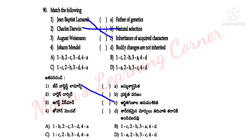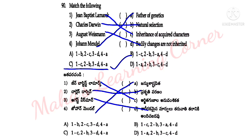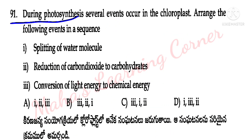Match the following scientists with their contributions: Charles Darwin — natural selection; August Weismann — bodily changes are not inherited; Gregor Johann Mendel — father of genetics. Correct answer: 1-C, 2-B, 3-D, 4-A. Option C is the correct answer.